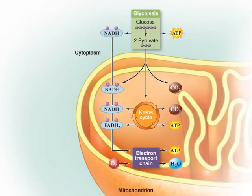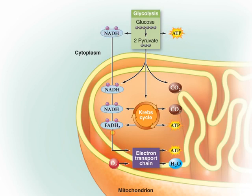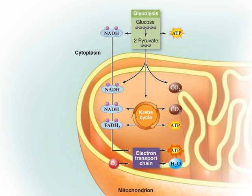Cellular respiration is a multiple step process. Glycolysis and the Krebs cycle produce a small amount of ATP and also produce electron carriers called NADH and FADH2. The electron carriers then travel to the electron transport chain, where the electrons they deposit provide the energy to produce many ATP. In fact, most of the ATP that a cell generates is the product of reactions of the electron transport chain.